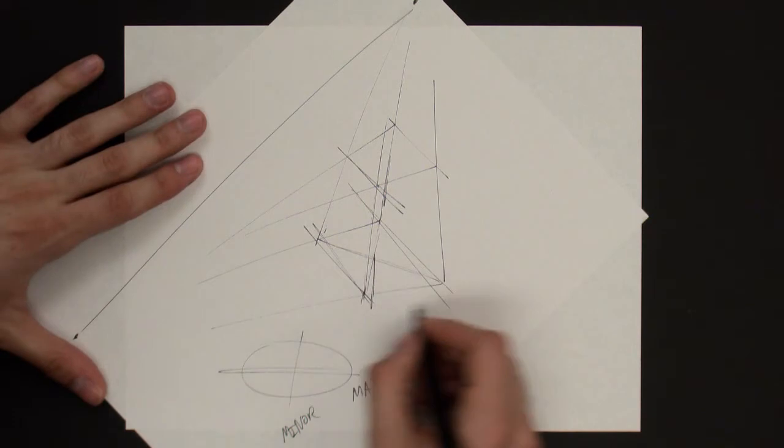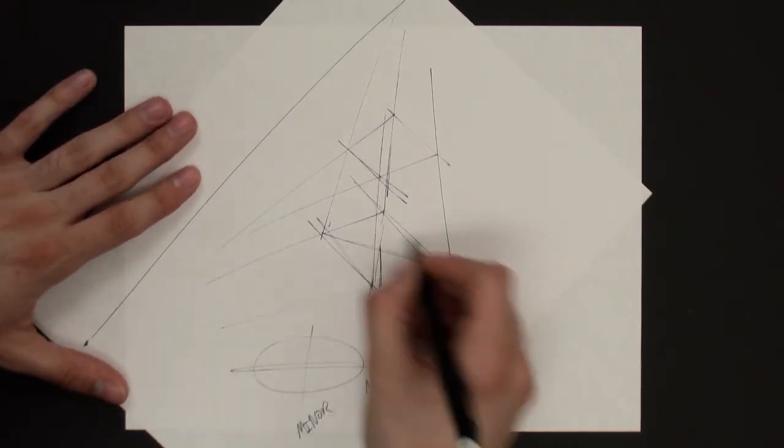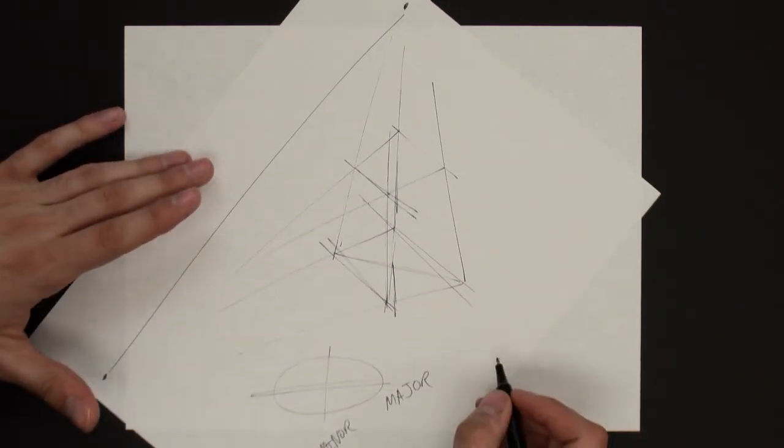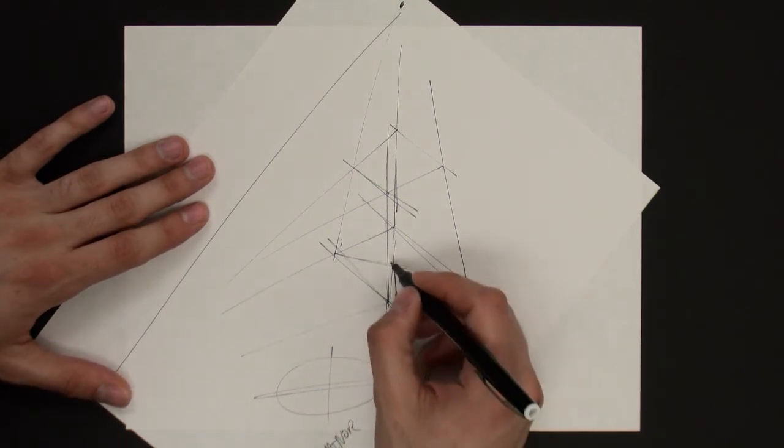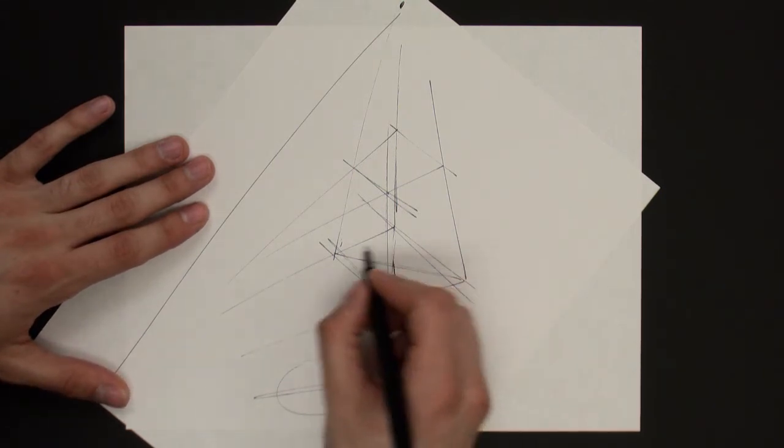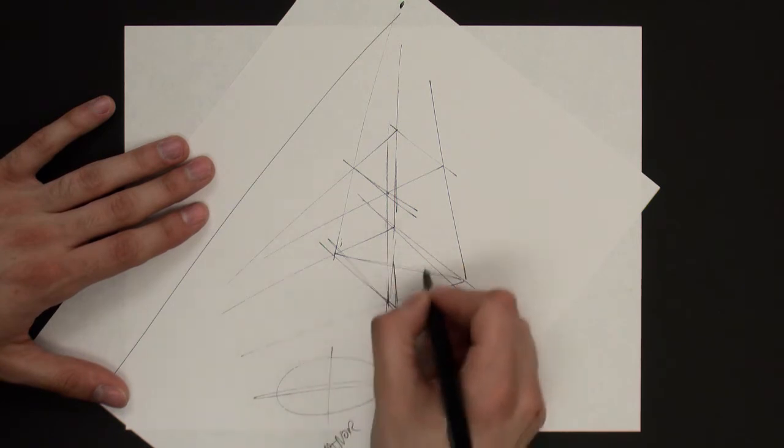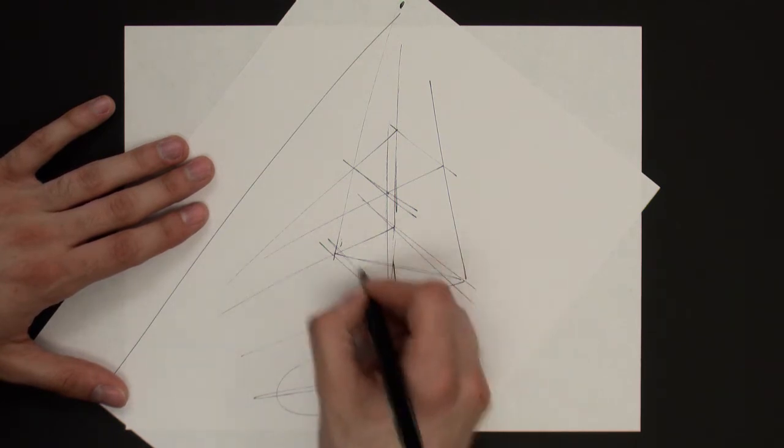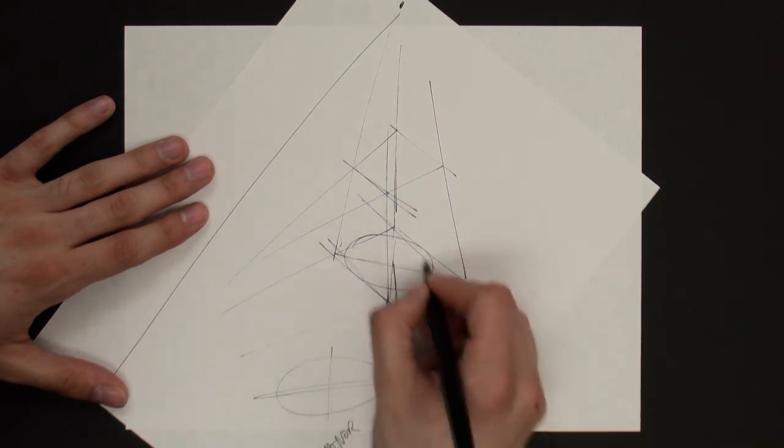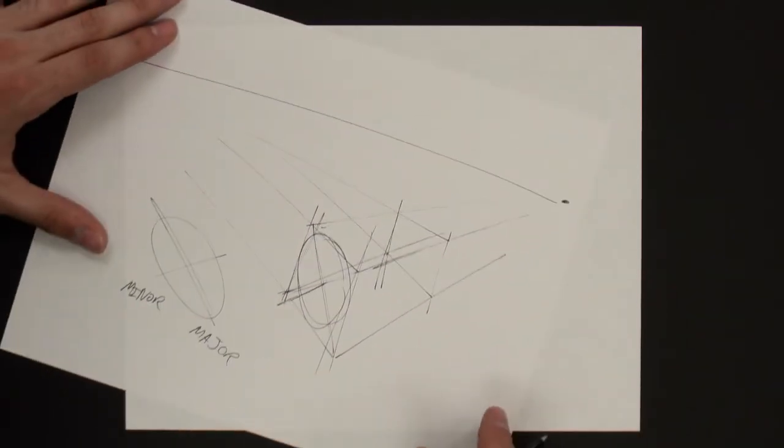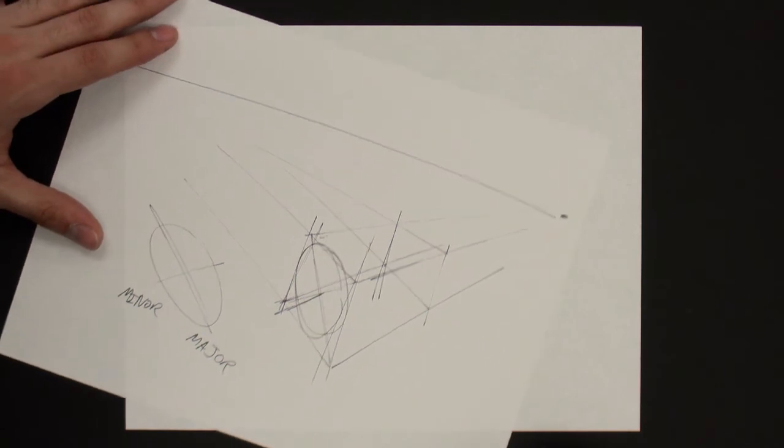So I'm going to start by just getting the shape down in the air. And I want my ellipse to touch some of these edges and have the minor axis along that center line there. So we're going to go ahead and lay that down. OK, not too bad. So there's our ellipse.